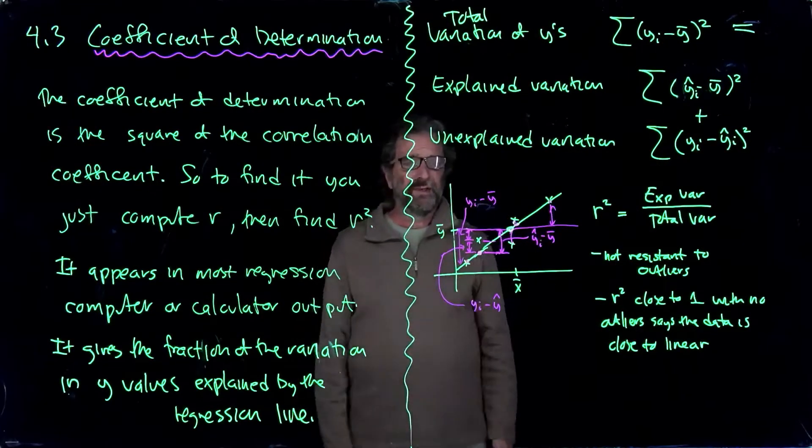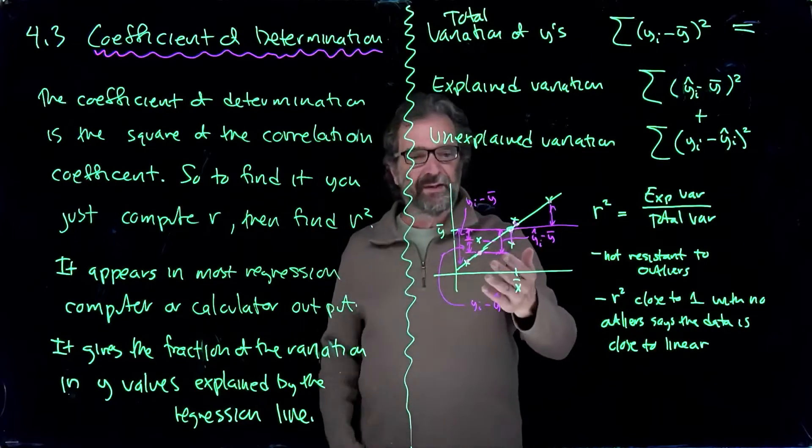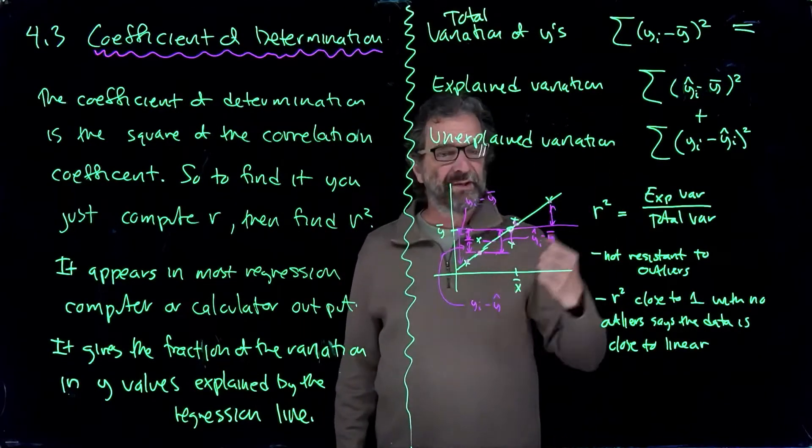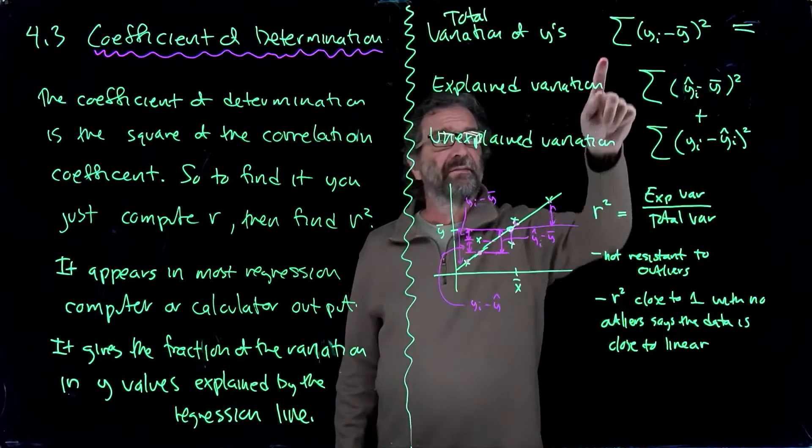It should be comparable. If it's approximately linear, then the two variations should be very close. If it's not linear, it turns out the total variation is bigger.